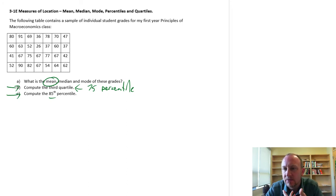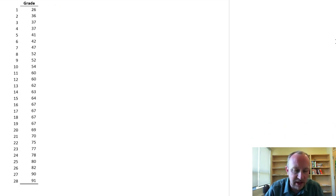The second initial step in these types of problems is sorting the data from smallest to largest value. So anytime you're presented with a problem like this, where you have a data set and you're asked to calculate any of these measures of location, first thing: count how many observations you have. Second thing: sort the data from smallest to largest value. So I've gone ahead and just to save some time, I've done that here.